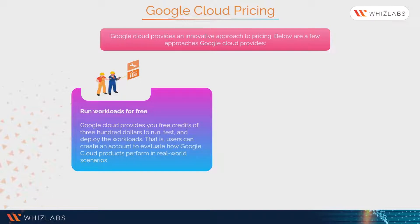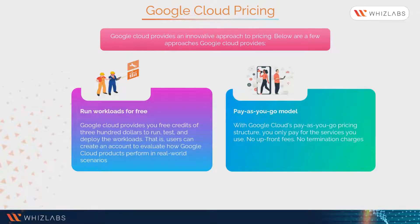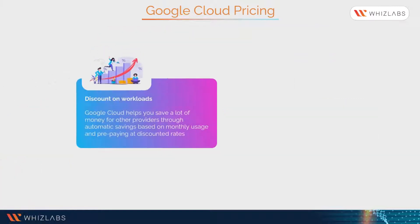Google Cloud provides 20+ products for free up to monthly usage limits. With Google Cloud's pay-as-you-go pricing structure, you only pay for the services you use — no upfront fees, no termination charges. Google Cloud also helps you save money through automatic savings based on monthly usage and prepaying at discounted rates.